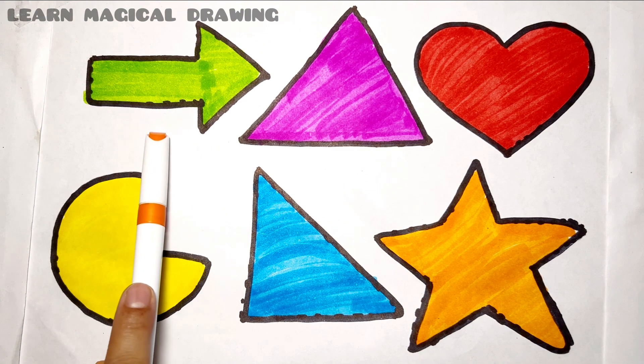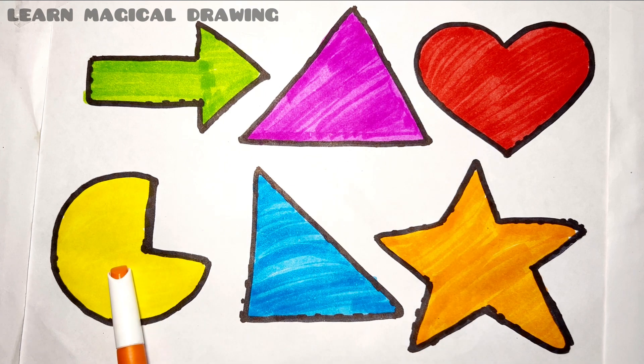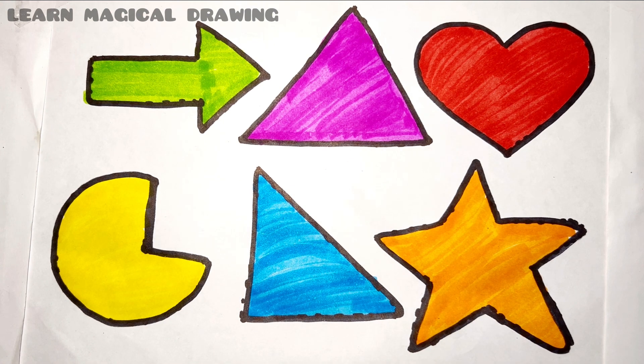Leader key. Arrow, triangle, heart shape, pie, triangle, star. Like and subscribe for more video.